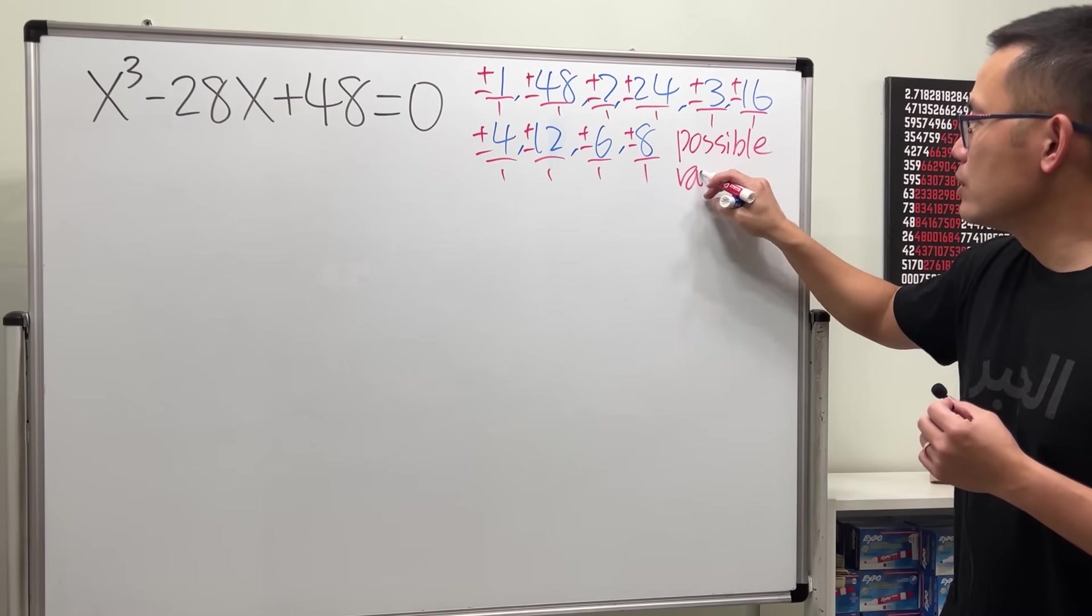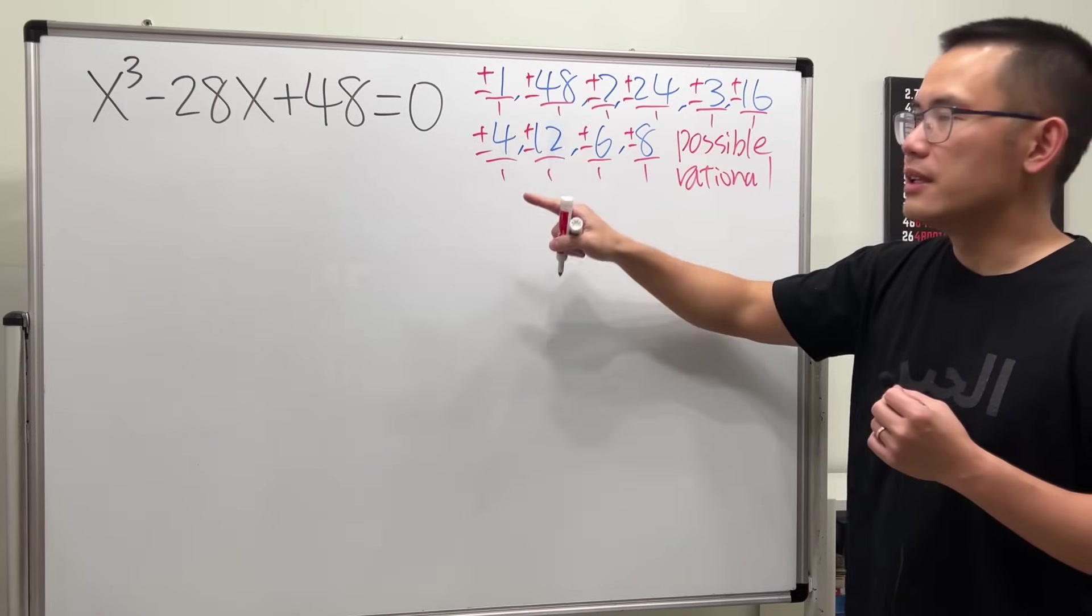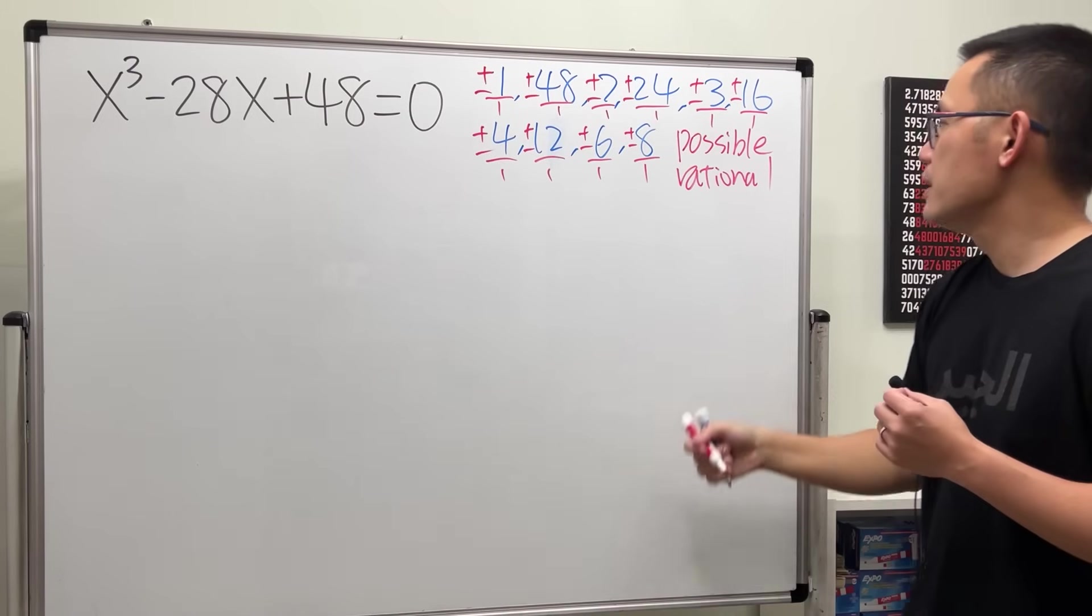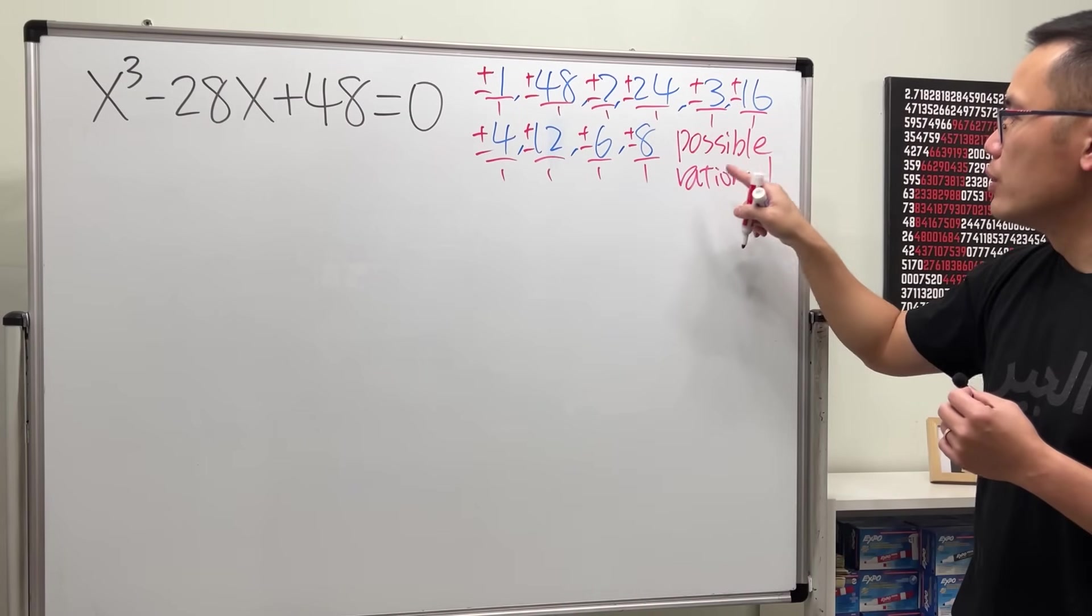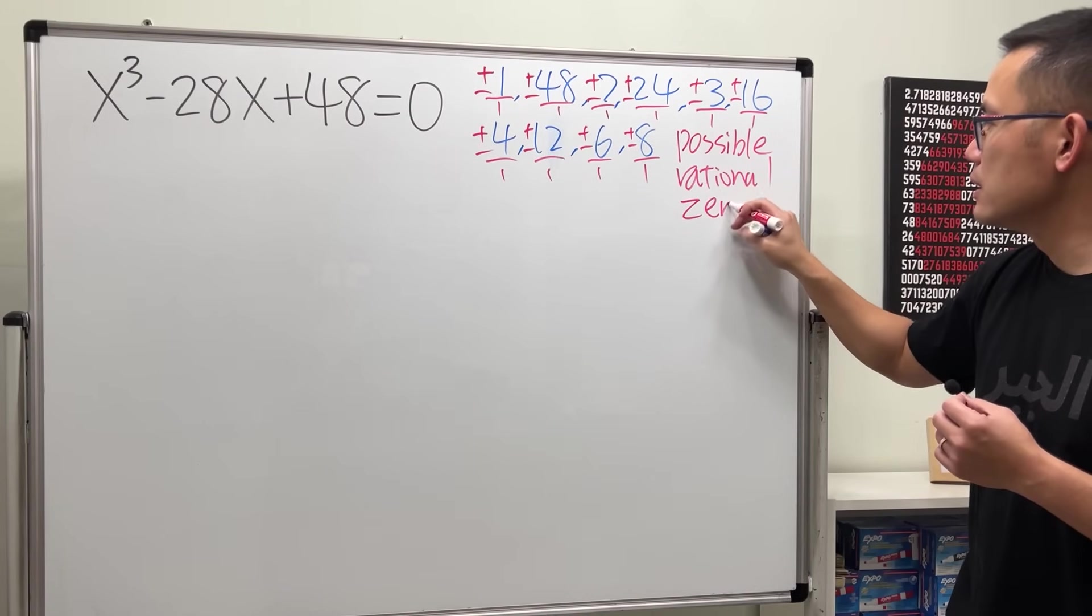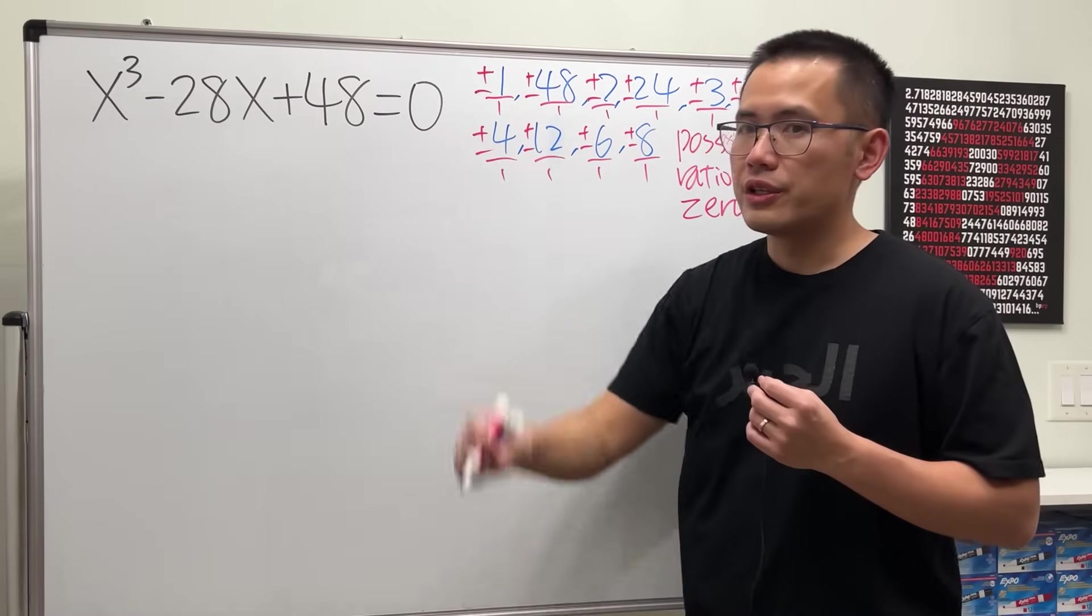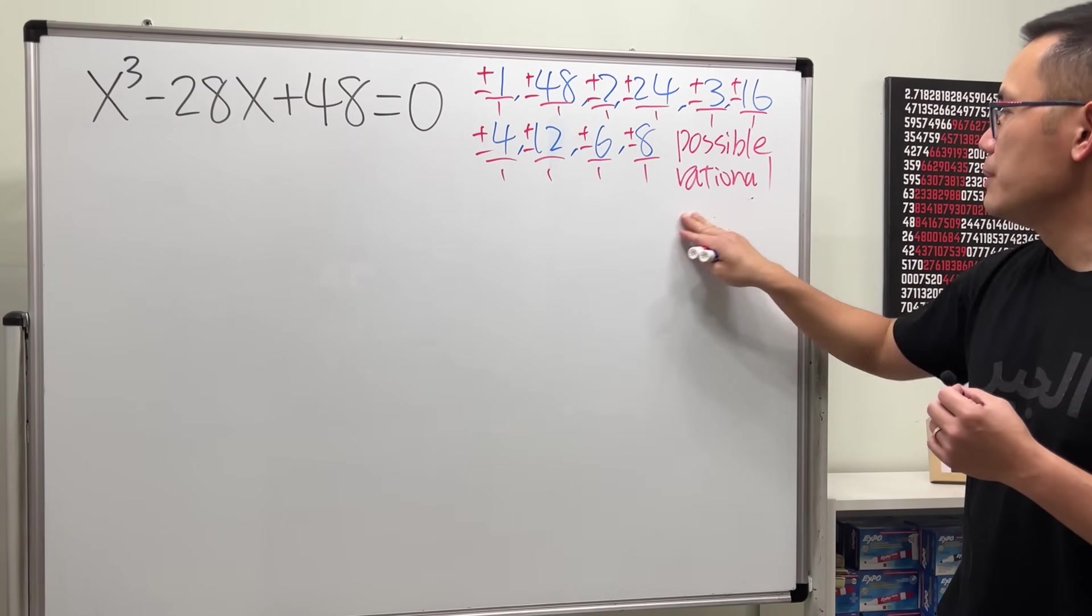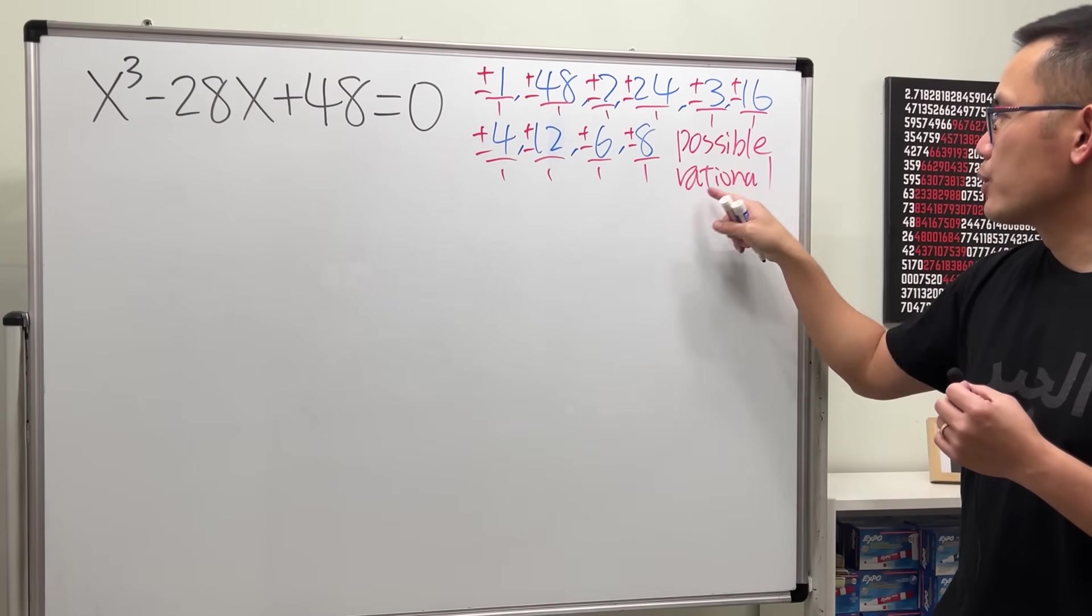Rational - rational meaning you have a fraction in the sense of a whole number divided by whole number, both positive or negative. So possible rational zeros for the equation here, or sometimes it's also called the root.